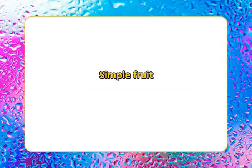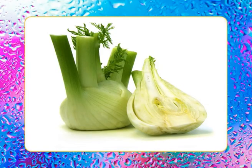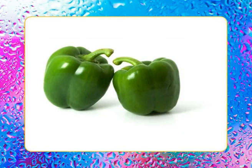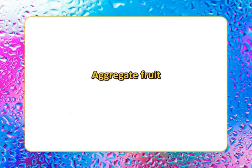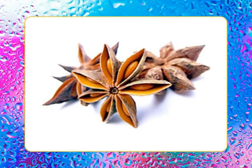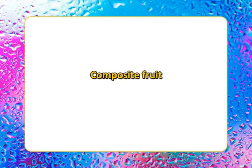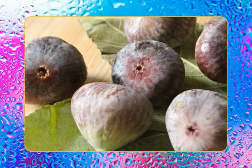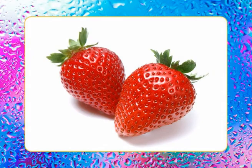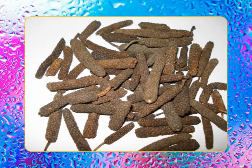Simple fruits are formed from a single or syncarpous ovary, that is, a single flower. Examples include fennel and capsicum. Aggregate fruits develop from an apocarpous gynoecium. Composite fruits are formed from the whole inflorescence — examples include figs, strawberry, and long pepper.